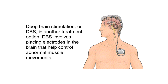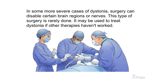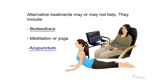Deep brain stimulation (DBS) is another treatment option, involving placing electrodes in the brain to help control abnormal muscle movements. In some more severe cases, surgery can disable certain brain regions or nerves, though this is rarely done and is used only if other therapies haven't worked. Alternative treatments such as biofeedback, meditation, yoga, and acupuncture may or may not help.